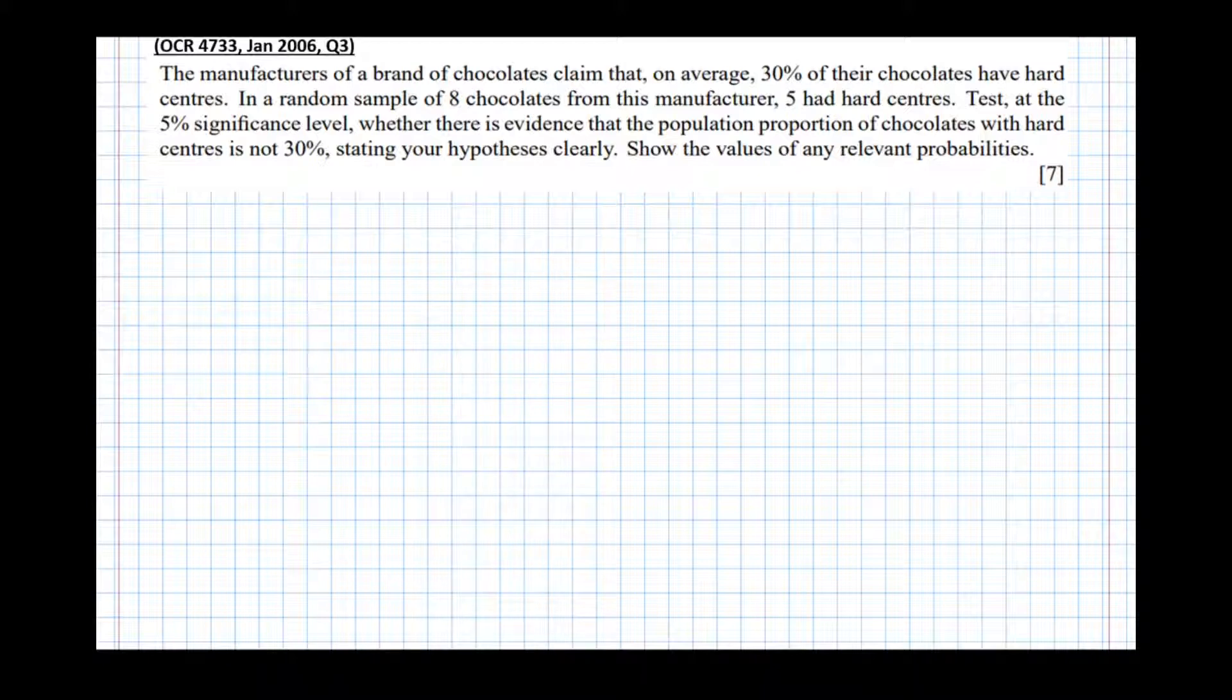So it says: the manufacturers of a brand of chocolates claim that on average 30% of their chocolates have hard centers. In a random sample of eight chocolates from this manufacturer, five had hard centers. Test at the 5% significance level whether there's evidence that the population proportion of chocolates with hard centers is not 30%, stating your hypotheses clearly. Show the values of any relevant probabilities.